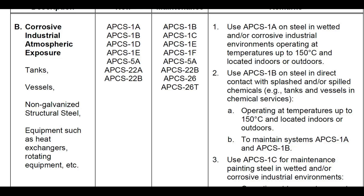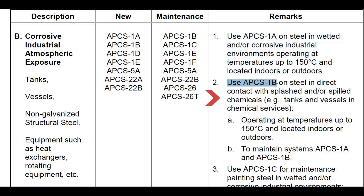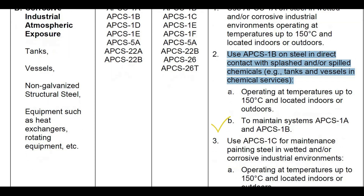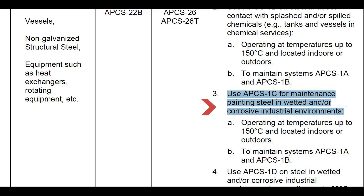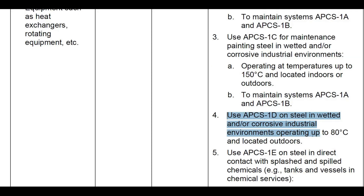When considering these coating systems for corrosive industrial environments, note the following. Point 1: Use APCS1A on steel in wetted and/or corrosive industrial environments operating up to 150°C, located indoors or outdoors. Point 2: Use APCS1B on steel in direct contact with splashed and/or spilled chemicals, such as tanks and vessels in chemical services, operating up to 150°C indoors or outdoors, and to maintain APCS1A and APCS1B systems. Point 3: Use APCS1C for maintenance painting on steel in wetted and/or corrosive industrial environments up to 150°C, indoors or outdoors, and to maintain APCS1A and APCS1B.